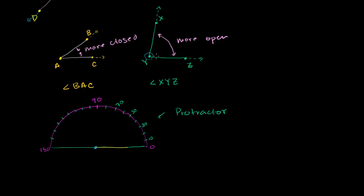I'm going to redraw angle XYZ at the center of this protractor. So Y is at the center, Z goes right over here, and then the other ray — ray YX — goes roughly in that direction. It is pointing on the protractor to about the 70th section, the 80th section... I would guess the 77th section. So this is pointing to 77 right over here.